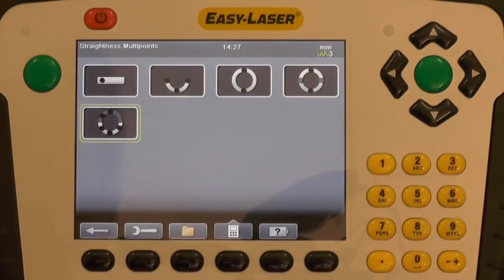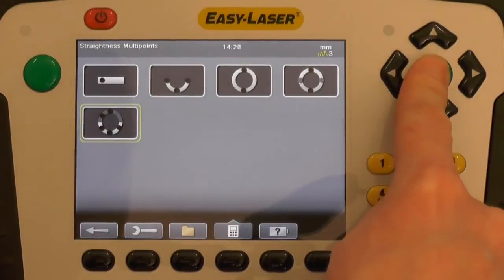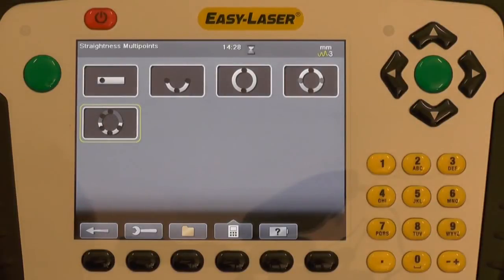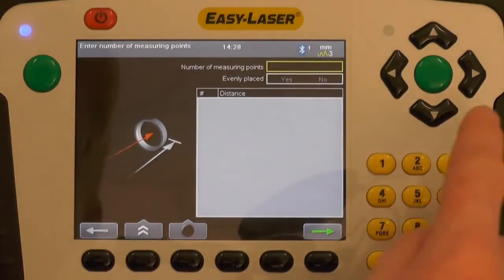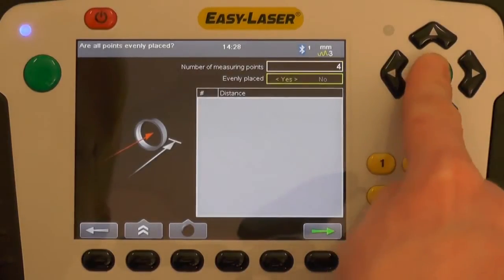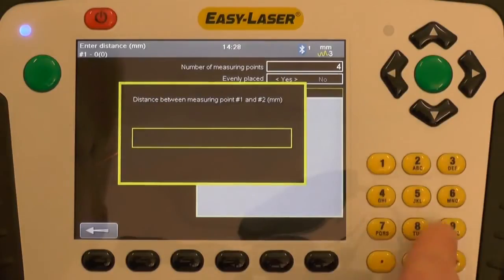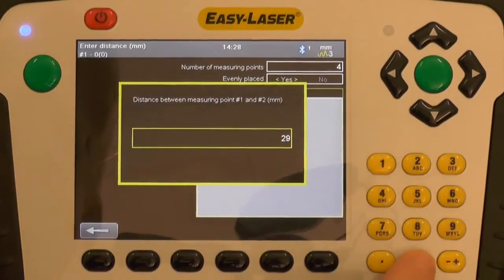Once the laser beam has been aligned I enter the straightness program. In this case I have full access to the bearing journal and will therefore measure multi-point mode. I will set up the measurement dimensions, in this case 4 bearing journals spaced 290 mm apart.